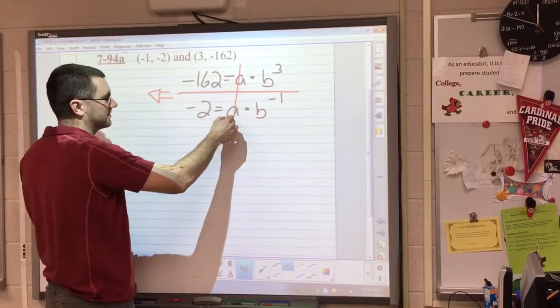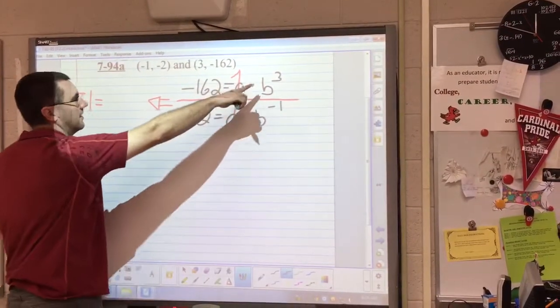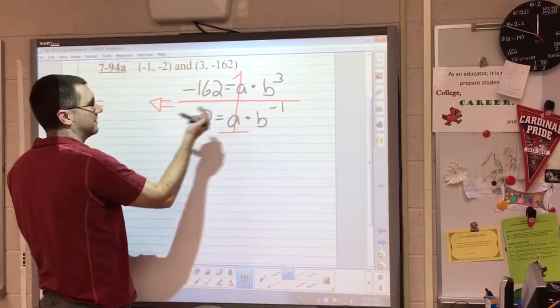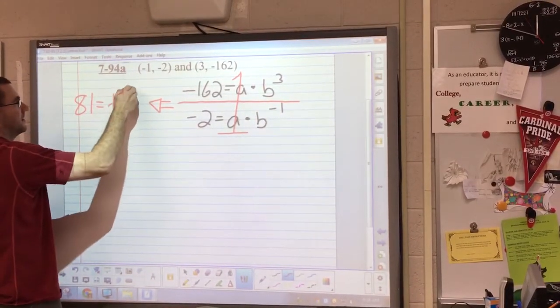a divided by a cancels out and becomes one, so I don't have to write it. Then b to the third over b to the negative one becomes b to the fourth power, if you remember your exponent rules.